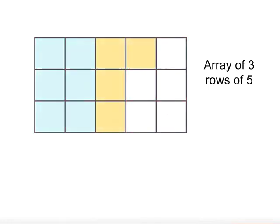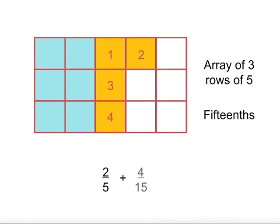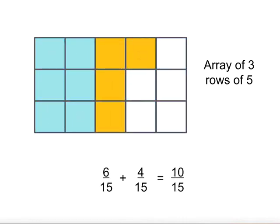Now if we have these two parts shaded, we want to work out what fraction sum they are showing. If we look at our fifths, we can see that the aqua part is covering two fifths. Next, we want to add the yellow part — if we look at our fifteenths, we can see that the yellow section is four fifteenths. Now to solve this problem, we need to rewrite the two fifths so that they are in fifteenths. We can see that two fifths is the same as six fifteenths, so altogether we have ten fifteenths.